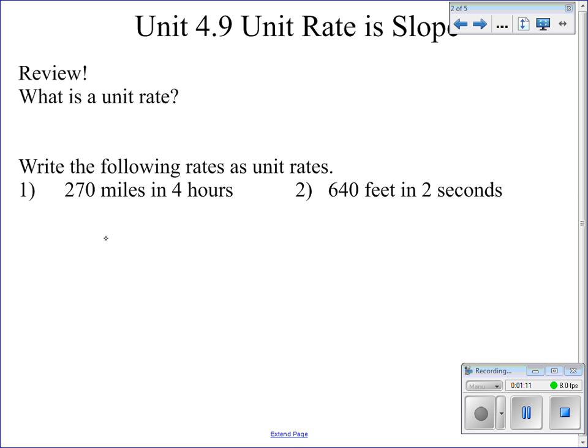The first example was 270 miles in 4 hours. Now, 270 miles is a rate, and we've studied rates already. Rates are a comparison—a comparison of two numbers using division with two different units. It's a ratio that uses two different units. You can see the unit being miles and hours, and it's comparing those two using division, which is why we can write it as a fraction.